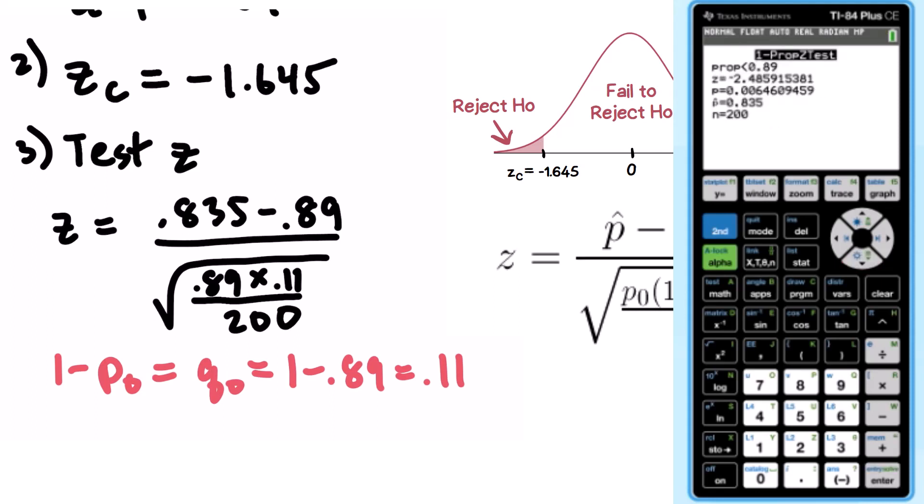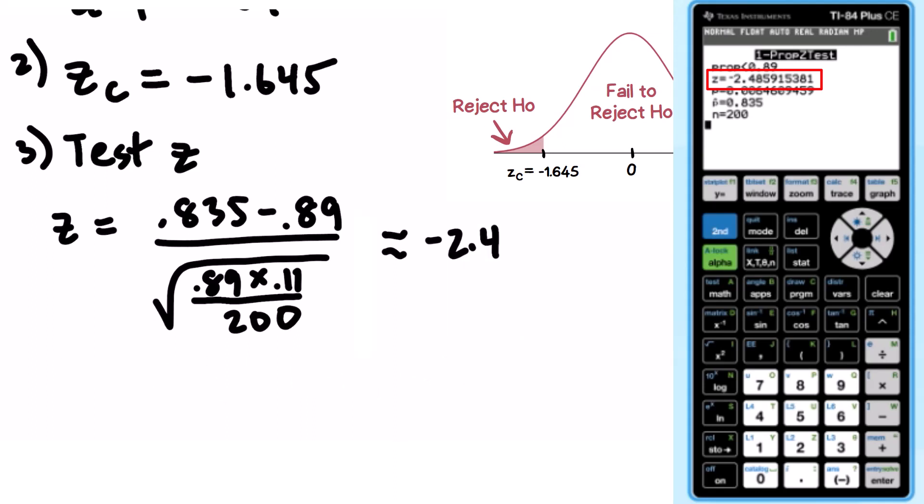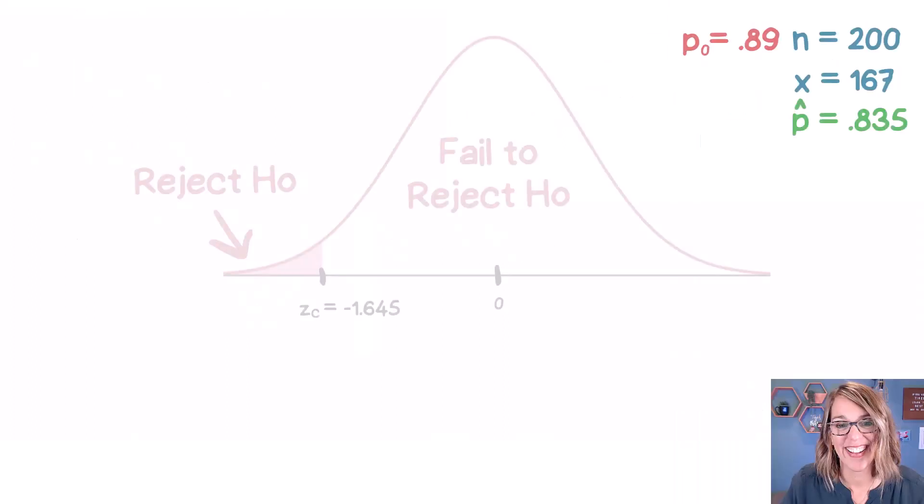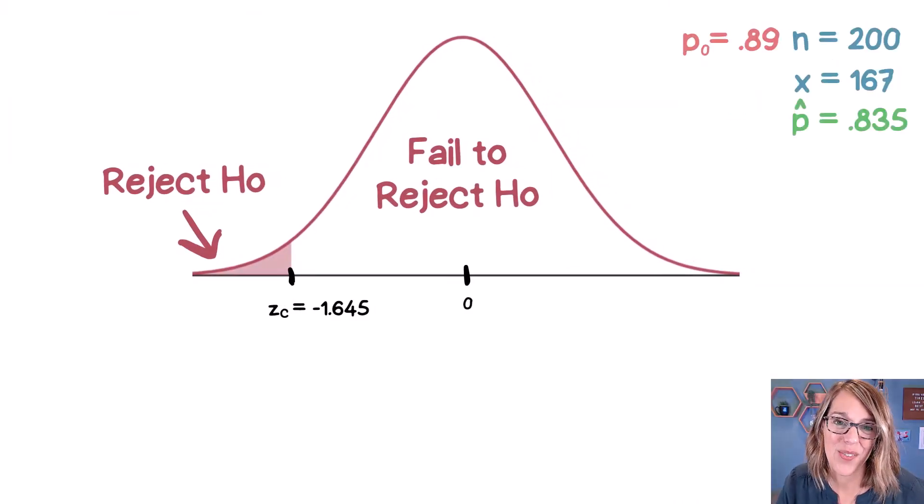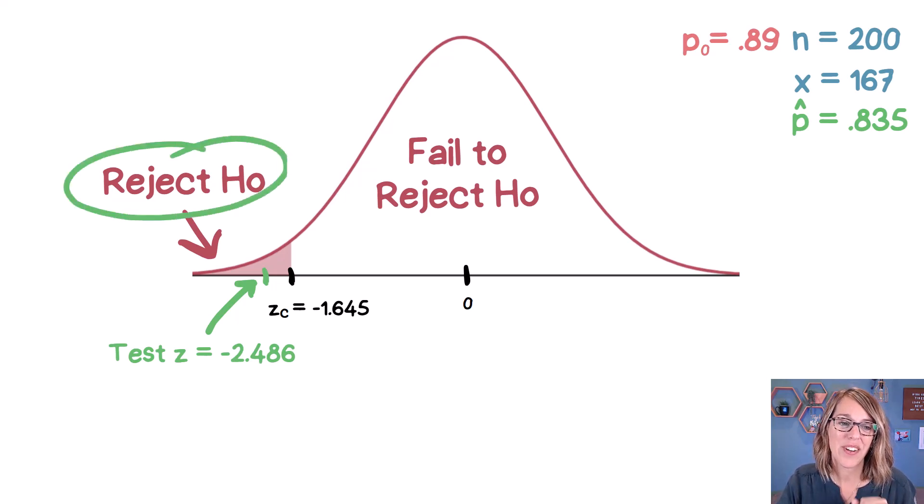And it gives me the same test value that I get from this formula. And that test value ends up to be negative 2.4859. We can call that 86. Let's put this right back onto our normal curve. We are definitely beyond 1.645 standard deviations away, which means that we're going to reject that null hypothesis.